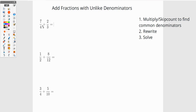So let's look at my first problem here. I have seven fourths plus two thirds. The first thing I'm going to do is multiply or skip count. I'll start easy, so let's go ahead and skip count. I have seven fourths, and then I have two thirds.